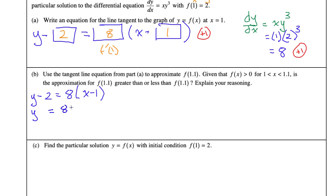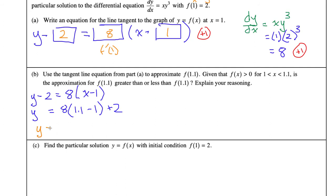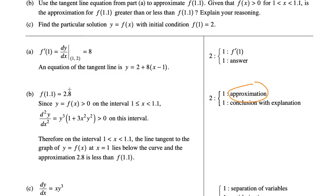We're going to see what that height is. So y minus 2 — I'm going to add the 2 to the other side — is equal to 8 times (1.1 minus 1) plus 2. Now, 1.1 minus 1 is 0.1, and 0.1 times 8 is 0.8, and plus 2 is 2.8. So y here is equal to 2.8. You should get about 2.8, and that's one point for that approximation.